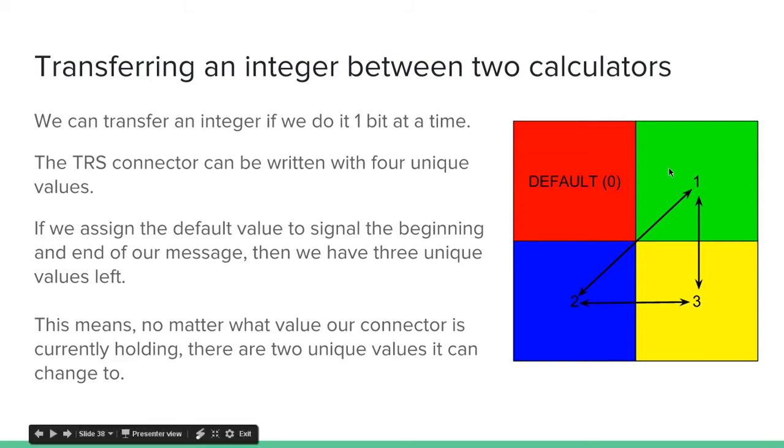So here you can see if we're holding the value 1, we can change to 3 or 2. If we're holding the value 2, we can change to 1 or 3. If we're holding the value 3, we can change to 1 or 2. So no matter which one of these three values we're on, we have two options to change to.